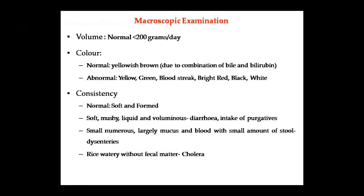Abnormal colors include yellow, green, blurred, streak, bright red, black, and white. Black or tarry stool indicates upper GI bleeding, which is called melena. Bright red color occurs with lower GI bleeding, like bleeding piles. Clay or pale color indicates obstructive jaundice. White color may be seen after a barium meal study.